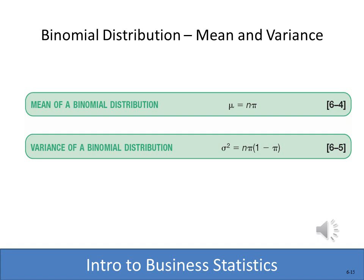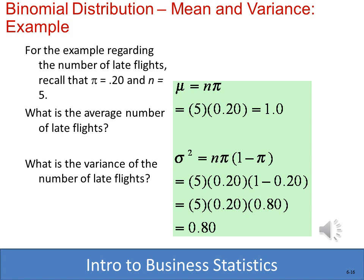Computing the mean and variance of a binomial distribution is very straightforward. The mean is simply n times the probability of success. Using our airline example, with five flights and probability 0.2, the mean is five times 0.2, which equals one — so on average we expect one flight to arrive late. The variance is n times pi times (1 minus pi), which is 5 times 0.2 times 0.8, giving a variance of 0.8.